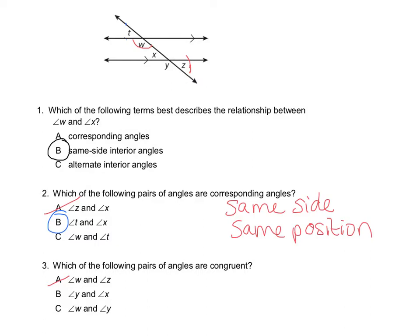Angle Y and angle X are linear pairs, so they're supplementary — they add up to 180 degrees, so they cannot be congruent. Let's check angle W and angle Y: those are corresponding angles, so they're congruent. Your answer is C.